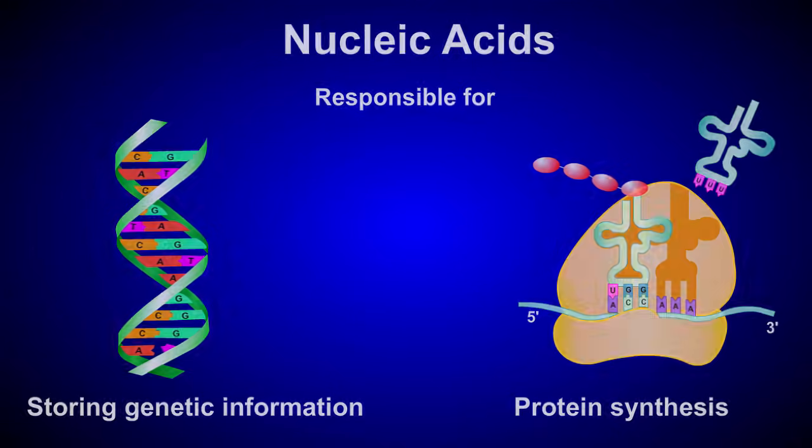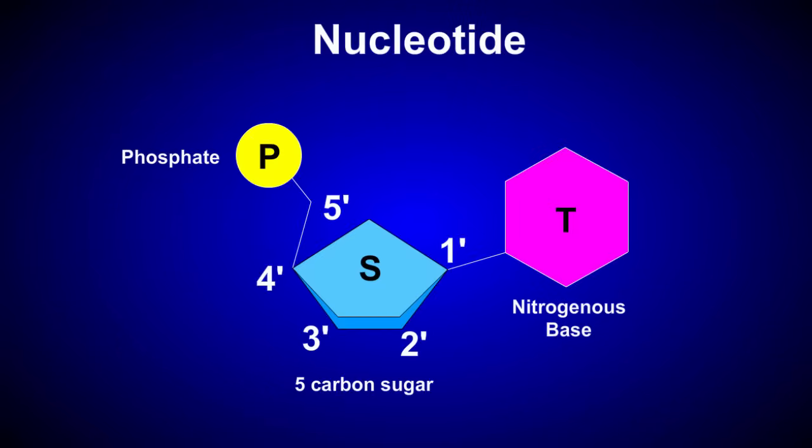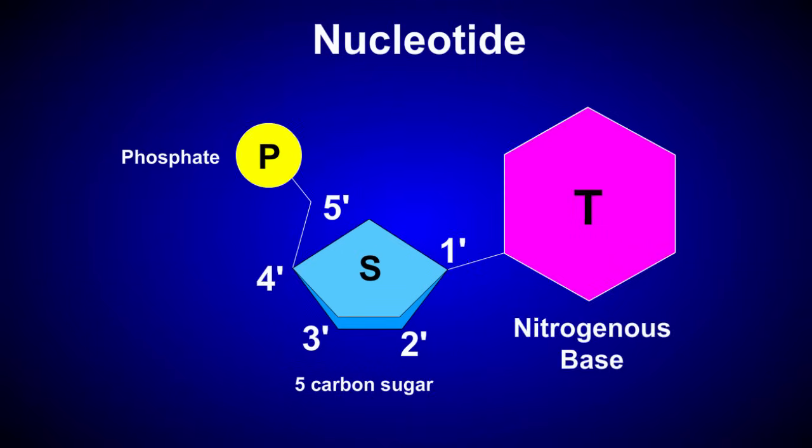Nucleic acids are made up of monomers called nucleotides. Nucleotides are made up of three components: a 5-carbon sugar, such as ribose, a phosphate functional group, and a nitrogenous base.